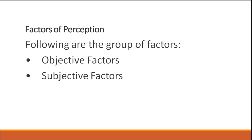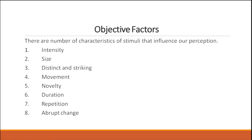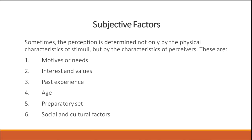The factors of perception are grouped into two categories: objective factors and subjective factors. Objective factors have high objectivity and minimal influence from external things; they include intensity, size, distinctness, movement, novelty, duration, repetition, and abrupt change. Subjective factors arise because perception is determined not only by physical characteristics of stimuli but also by characteristics of the perceiver, such as motives or needs, interests and values, past experience, age, preparatory set, and social and cultural factors.